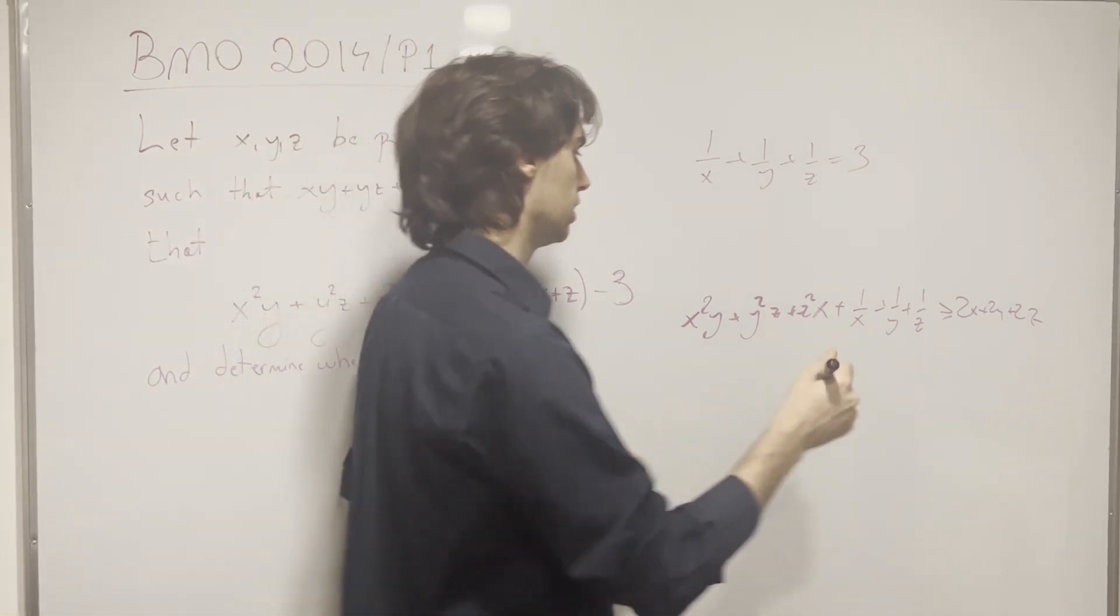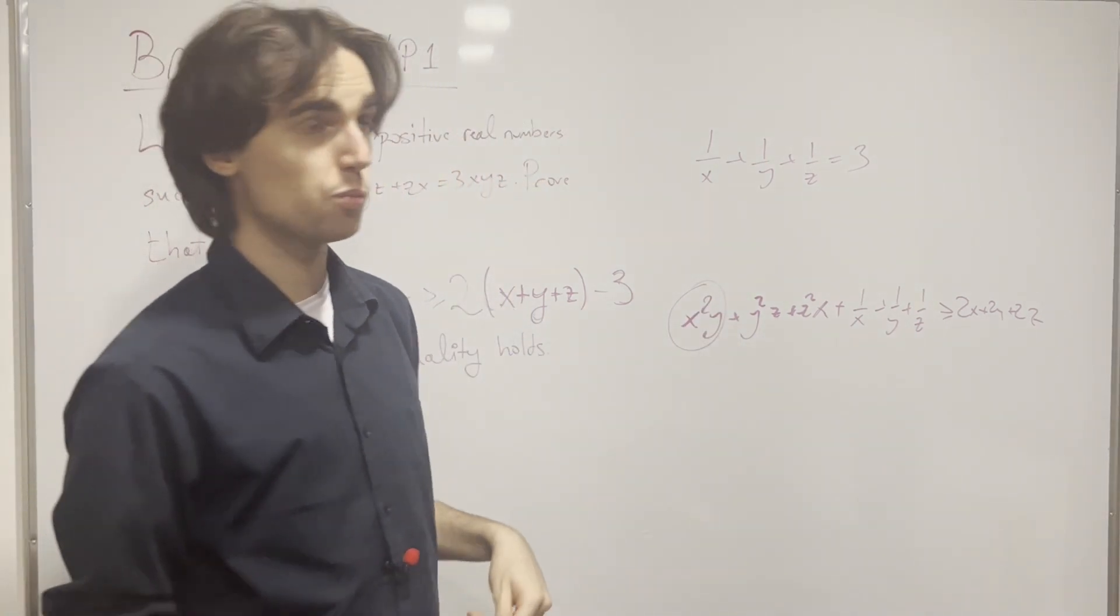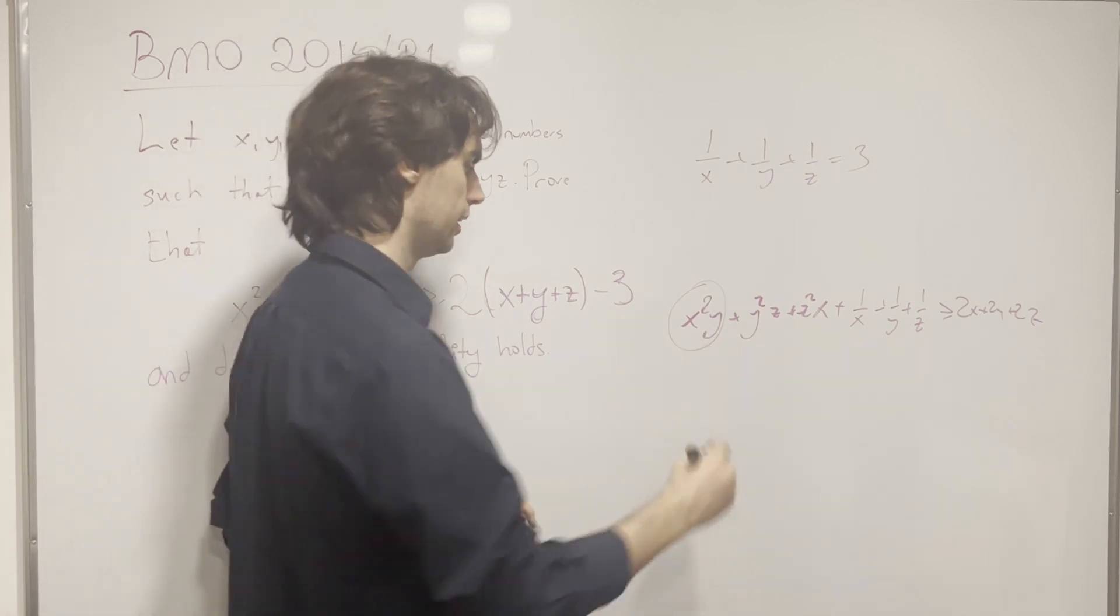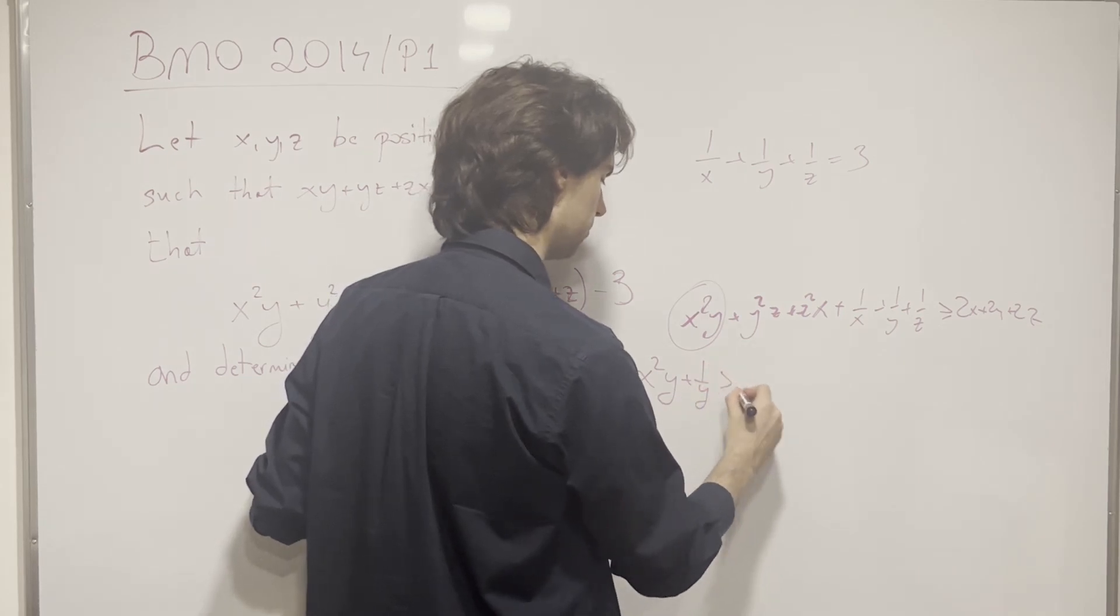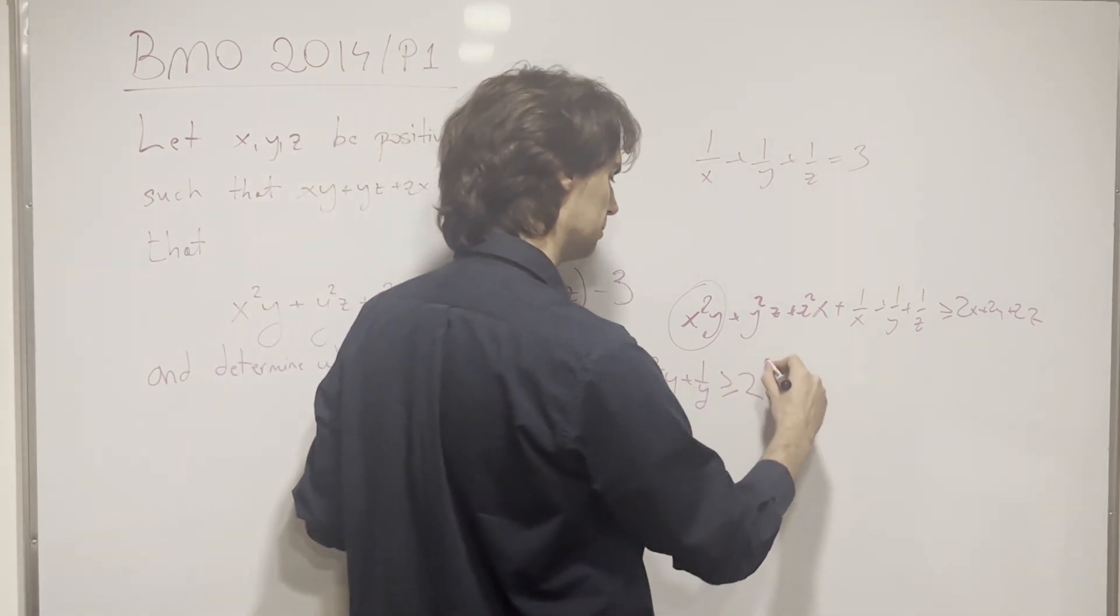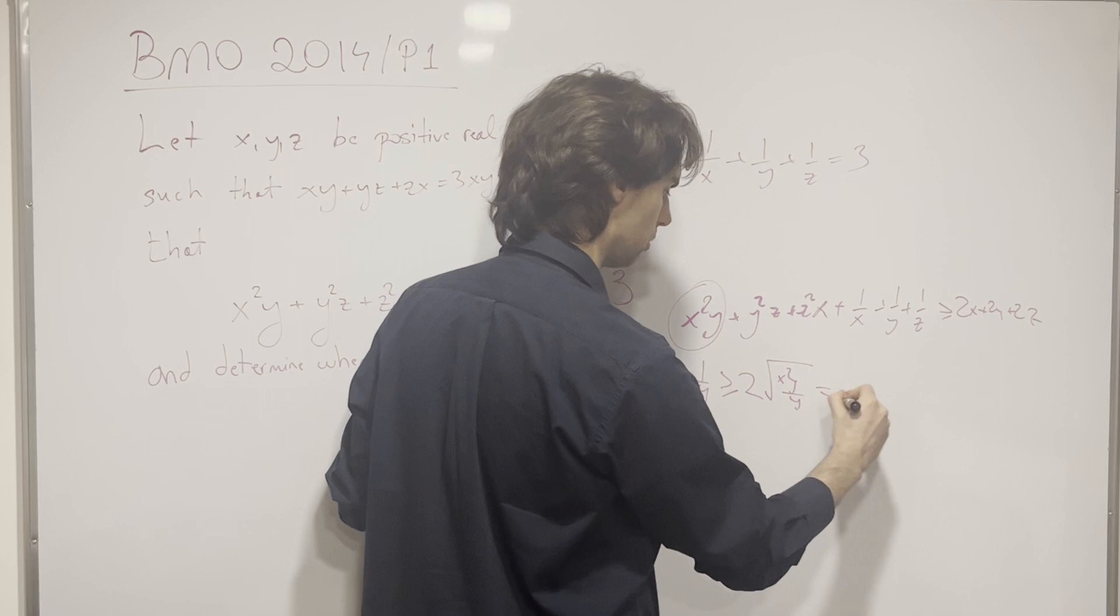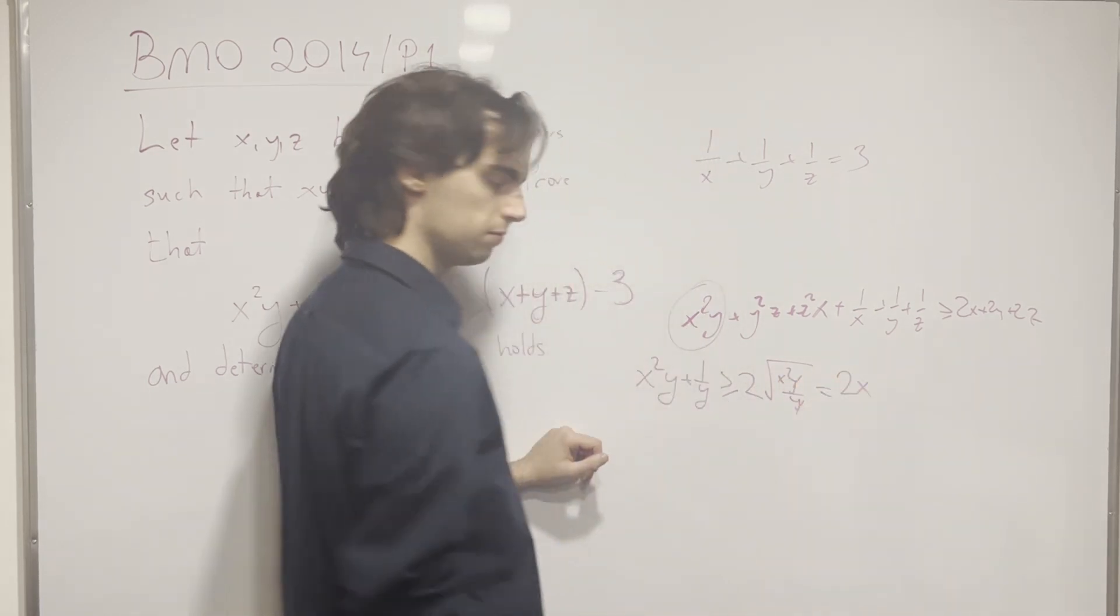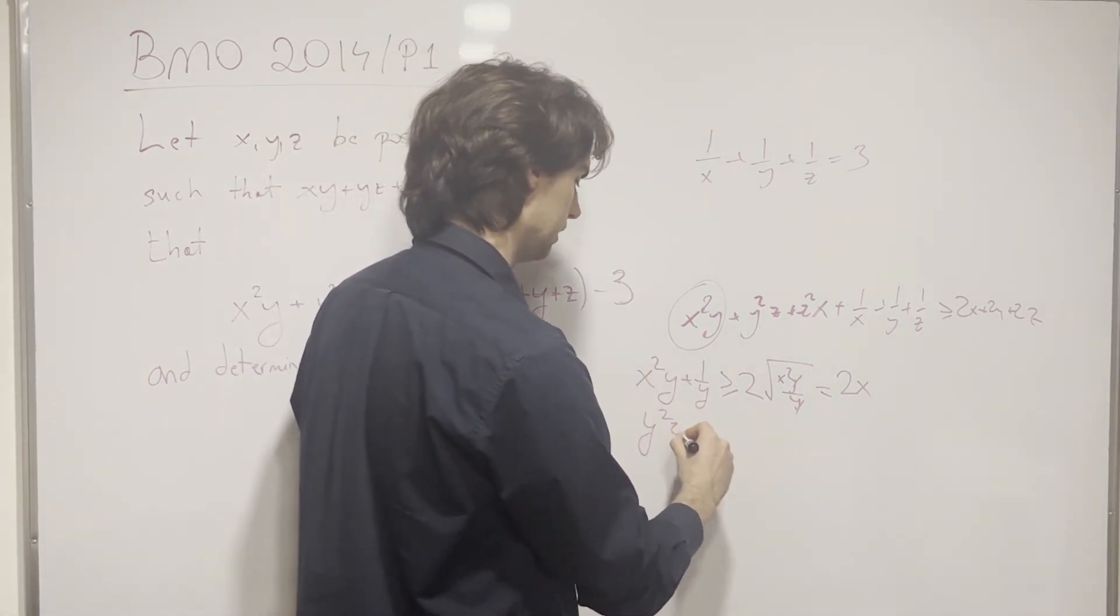And the answer is, well, you can go ahead. I have x squared y. I'm going to get rid of one of these two. Let me get rid of the y. So let me do x squared y plus 1/y. This is by AM-GM greater than or equal to 2 times the square root of x squared y over y, which is 2 times the square root of x squared, which is 2x. And now you see, we are quickly done.